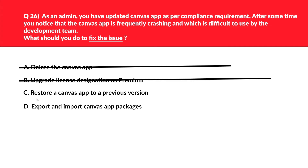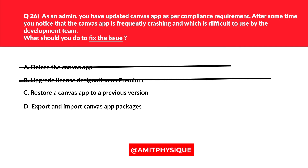Let's look at option C: restore a canvas app to a previous version. If you have multiple versions of the app, you have the option to restore to a previous version. Think of it like updating software in Windows — if it has usability issues after an update, you can restore it to the previous version, like creating a restore point. This could be the potential answer. Let's also look at option D: export and import canvas app packages.